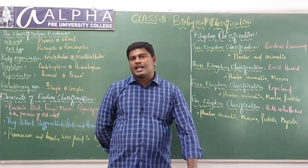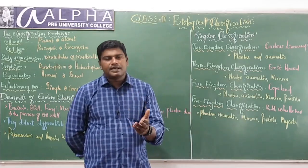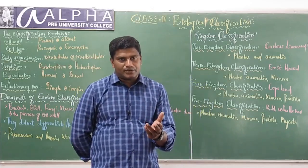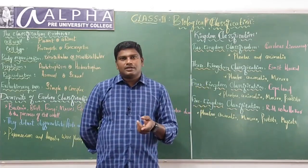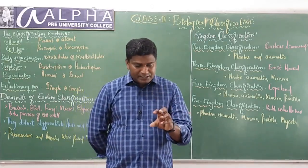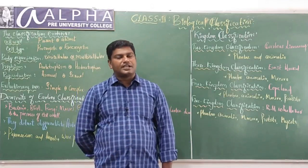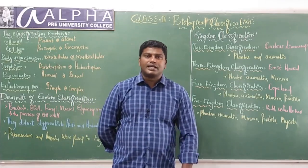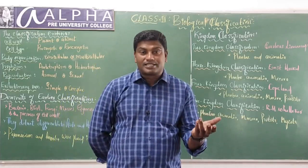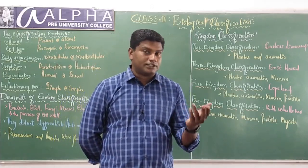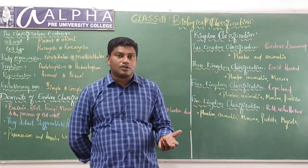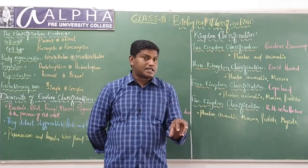In the last class, I told you that Aristotle was the first person who pioneered classification. Aristotle was the first person to attempt methods of classification, and he is the first person to start the study of biology. Hence, we call him the father of biology. He is also called the father of zoology. And the father of botany is Theophrastus.